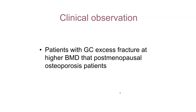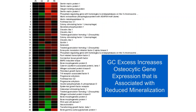The clinical observation is that patients with glucocorticoid excess fracture at higher bone densities than postmenopausal women with osteoporosis. We went back to the microarray and saw that not only did we have increased Wnt inhibitor proteins reducing osteoblast activity, but we also had an increase in osteocytic genes including DMP and sclerostin, which made us begin to think that something was happening in the osteocyte in the presence of glucocorticoids.